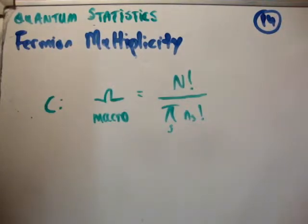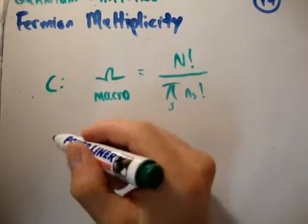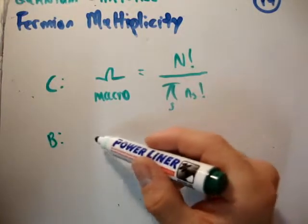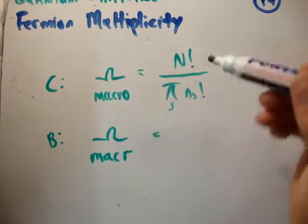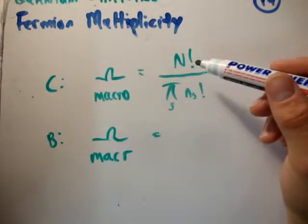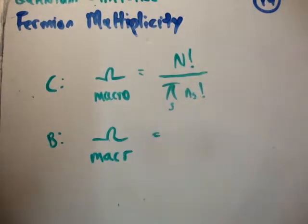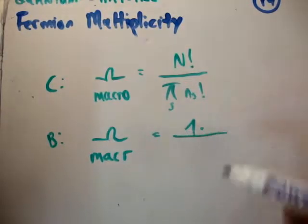But when we looked then at bosons, which were identical, so this is boson one, the macroscopic description. Well, there's only one way of choosing N particles. You either put them in, you either choose them or you don't choose them. So there's only one way.